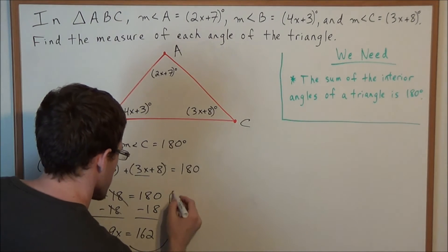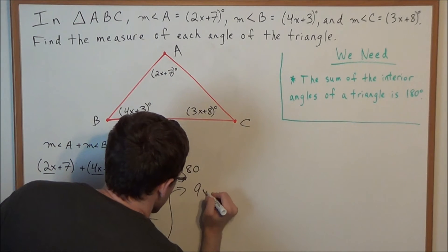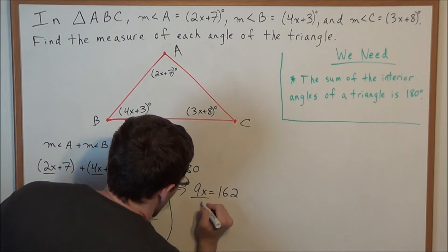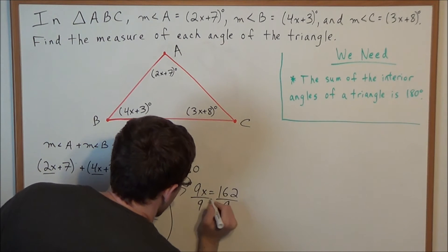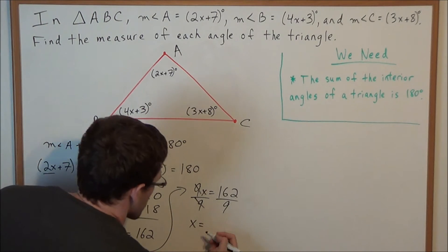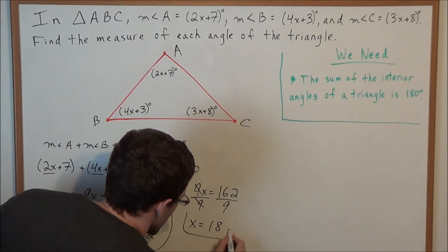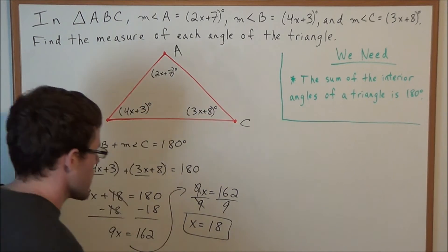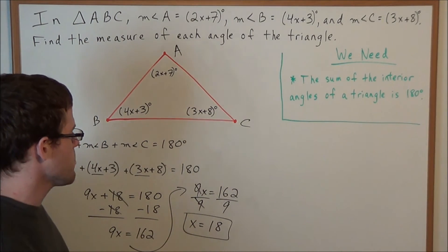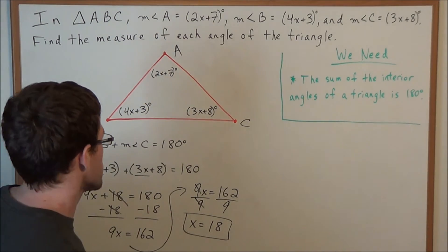We have 9x equals 162. To solve for x, we divide both sides by 9, and we get x equals 18 — since 162 divided by 9 is 18. But we're not done yet. We need to take this value x equals 18 and plug it in for each of these angles to find the exact angle measure.